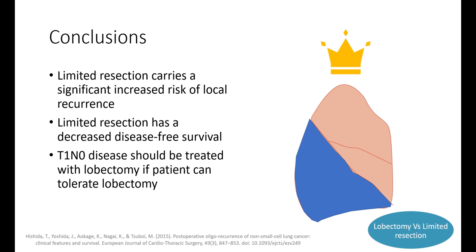So the question becomes: does having local regional recurrence affect overall survival? There are some recent studies — particularly one from around 2015 in the European Journal of Cardiothoracic Surgery — that look at postoperative oligo-recurrence and poly-recurrence and show that survival rate is decreased for patients with recurrence, and that definitive local treatment of the recurrence does improve survival. So one can reasonably assume that local regional recurrence is associated with decreased overall survival, and therefore lobectomy remains the appropriate surgical resection for patients with even T1N0 lung cancer to provide the best long-term survival.